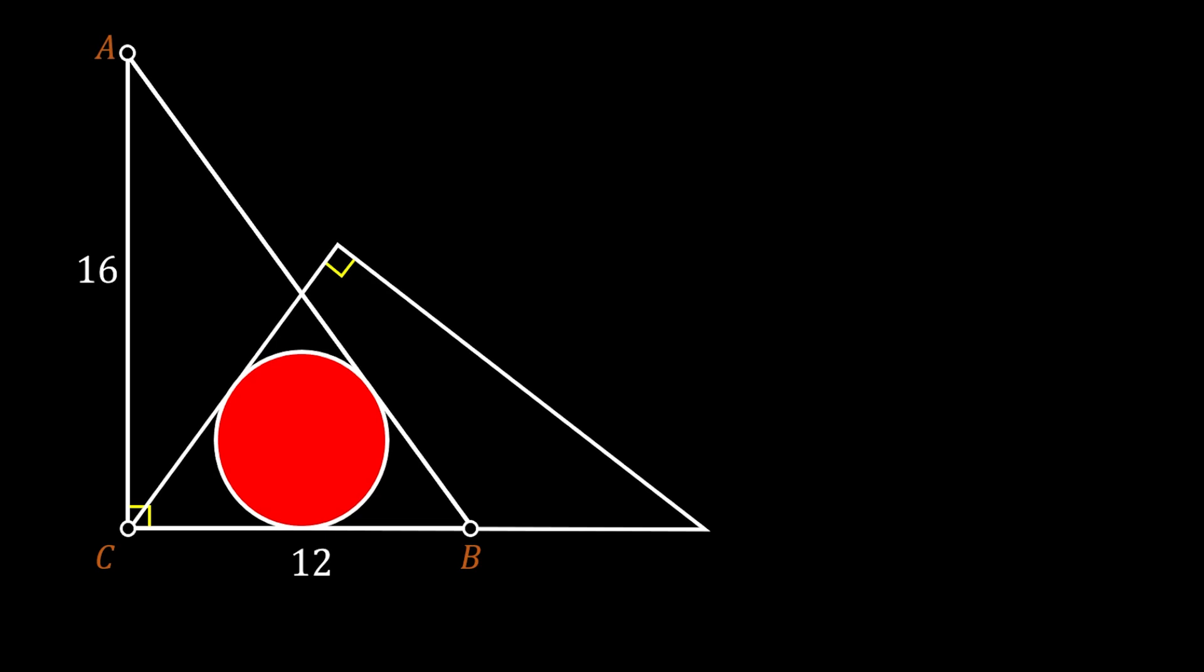We will also label two remaining vertices of our copied triangle as D and E. And we can label the point of intersection between those two triangles as F.